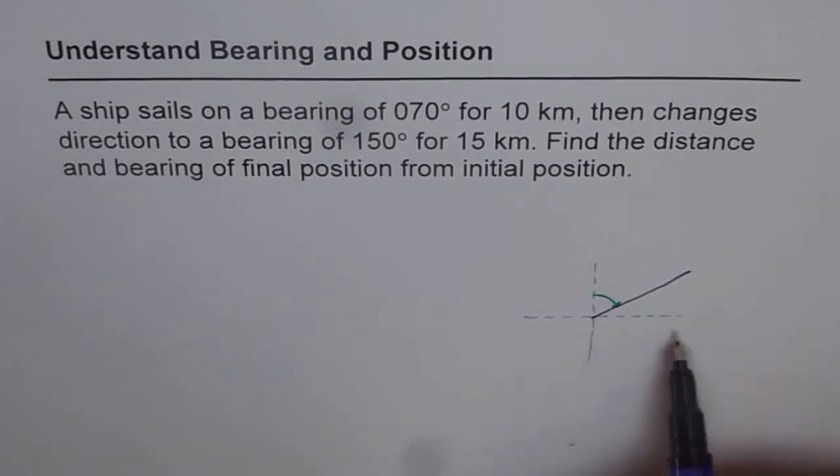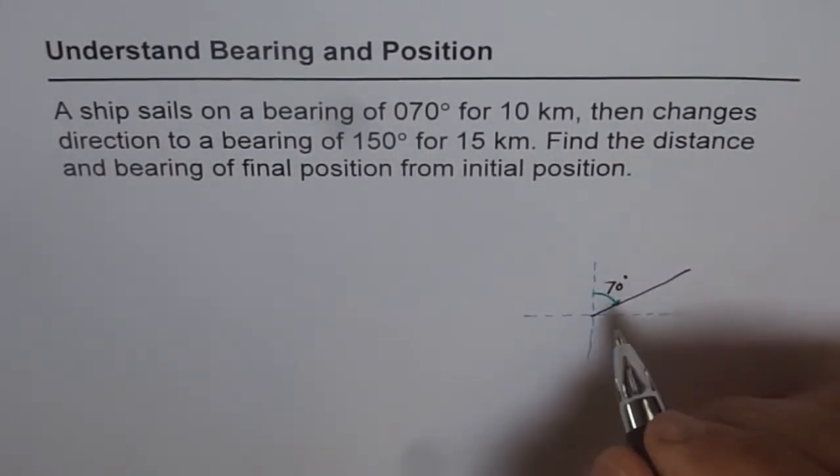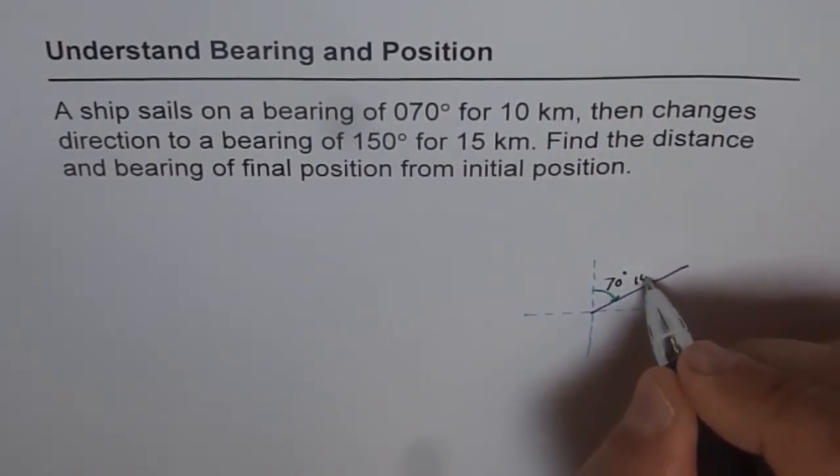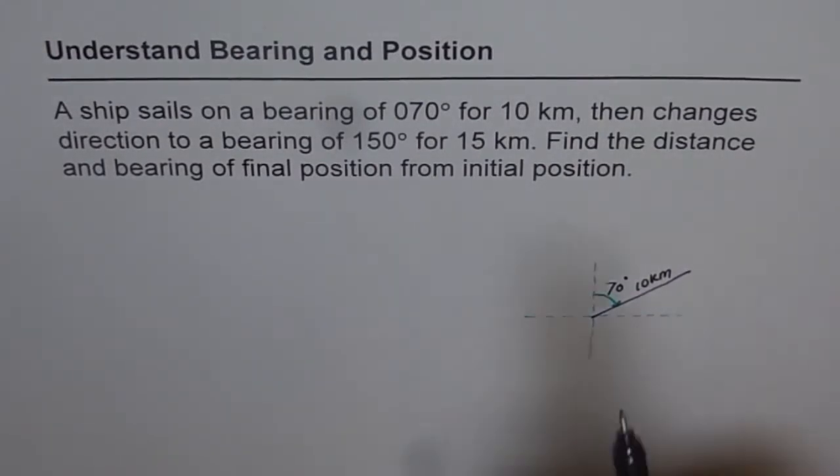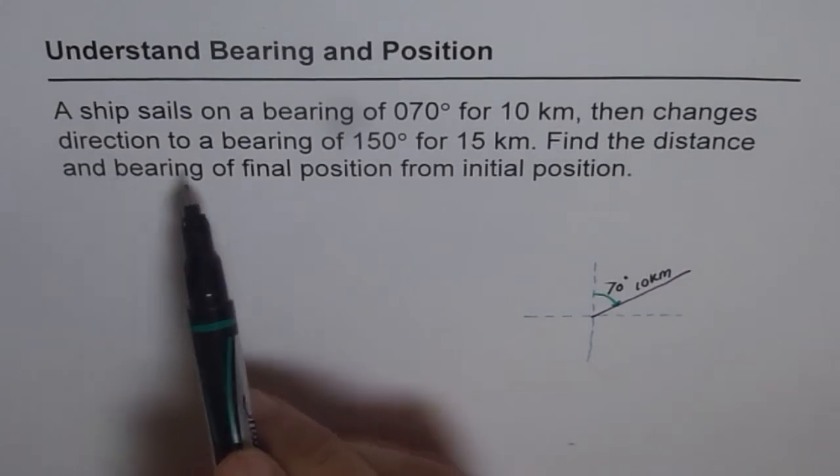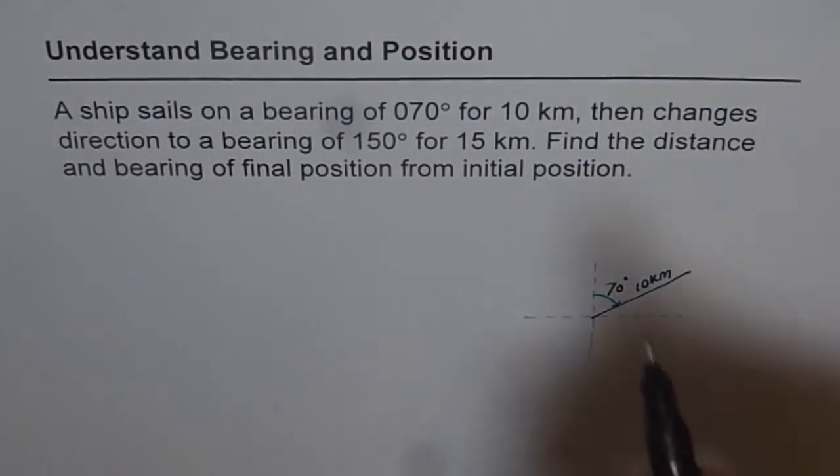So when I draw axis like this, which is vertical, it is a two-dimensional plane, X and Y axis. In this, as you can see here, we have an angle of 70 degrees from the north. And this distance is 10 kilometers. So let me write 10 kilometers here. Now the next statement is, then changes direction to a bearing of 150 degrees for 15 kilometers.